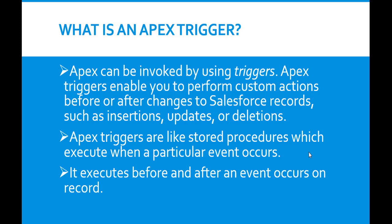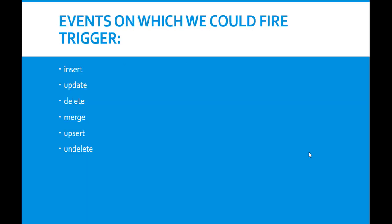Apex triggers execute before and after an event occurs on the records. The different kinds of events where we can fire a trigger include insert of a new record, updating an existing record, deleting a particular record, merging records, upsert operations on records, and undelete operations on records. These are the events on which we can fire a particular trigger.